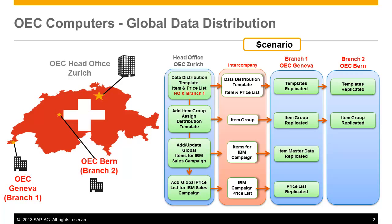OEC Computers, a Swiss head office based in Zurich, are planning to launch a special sales campaign for IBM printers. The head office branch wants to launch this campaign from the Geneva office only. A number of new IBM printers have been received in stock, and OEC Computers plans to distribute the item master data for these printers to their Geneva branch in preparation for the sales campaign. A special campaign price list will also be used for these items for the period of the campaign.